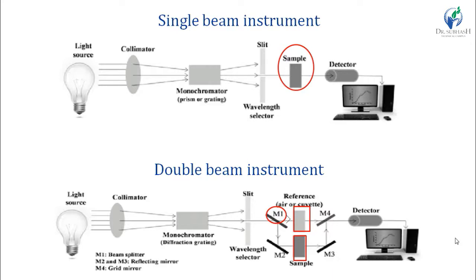In single beam instrument, only the sample is determined. In double beam instrument, the sample is determined in comparison to its reference compound. The radiation beam from the monochromator is split into two beams — one passes through reference and one through sample. After passing, the beams are combined if there is one detector, or kept separate if two individual detectors are used.